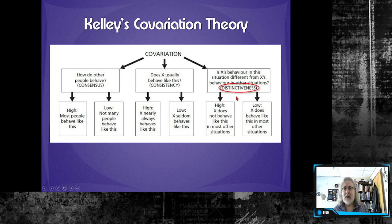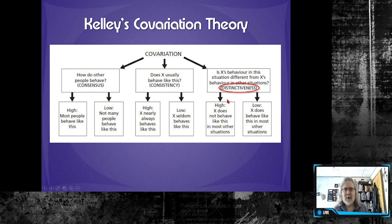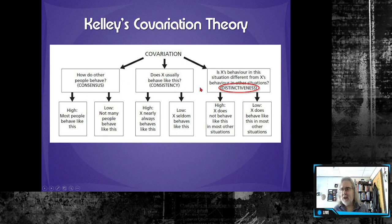You might make a different attribution based on that. Think about someone who is typically very conscientious and hard-working, and then one day they just don't seem to care about work — that's high distinctiveness because it's not typical. You'd think something is different. Kelly argues that we use each of these factors to help determine an attribution, specifically whether we make an internal or external attribution.